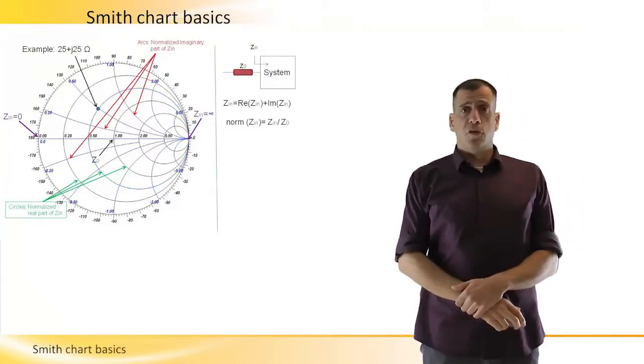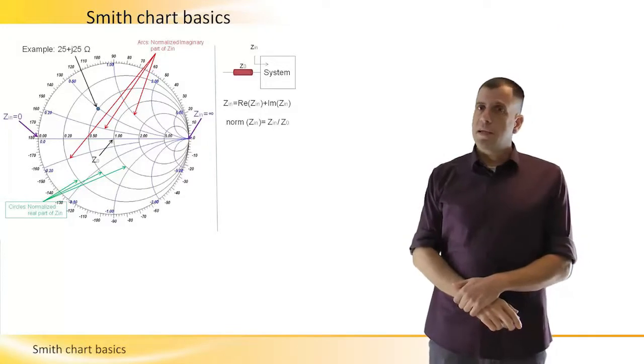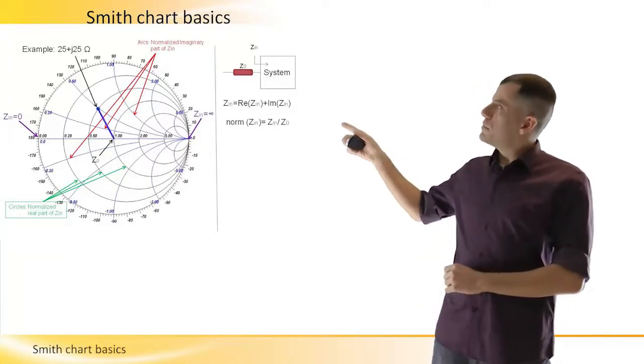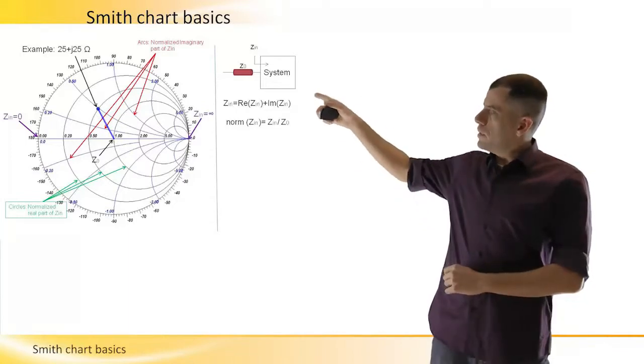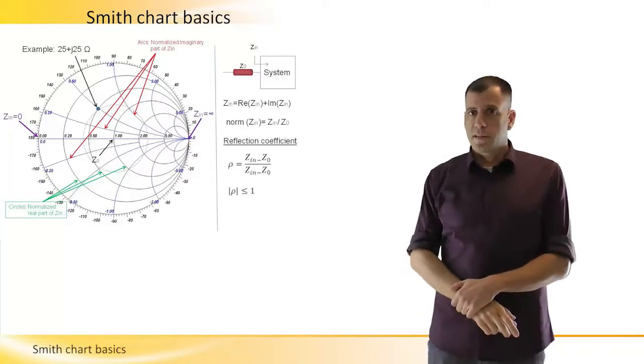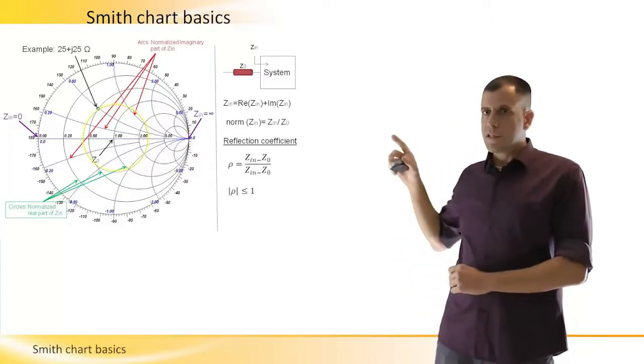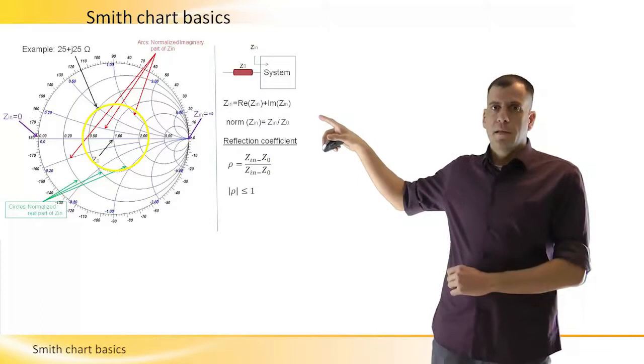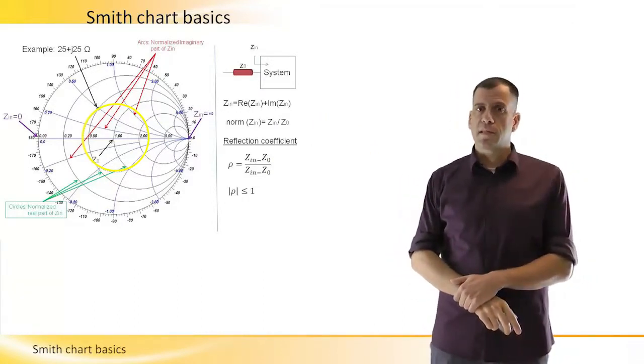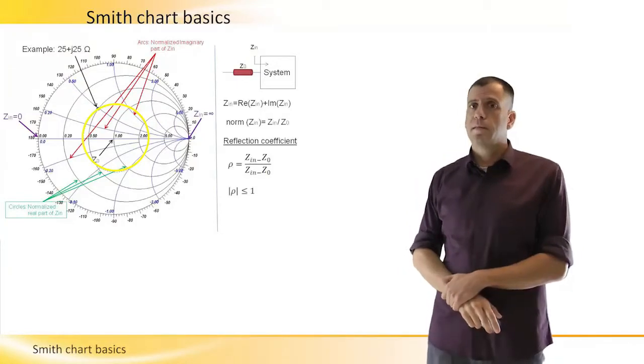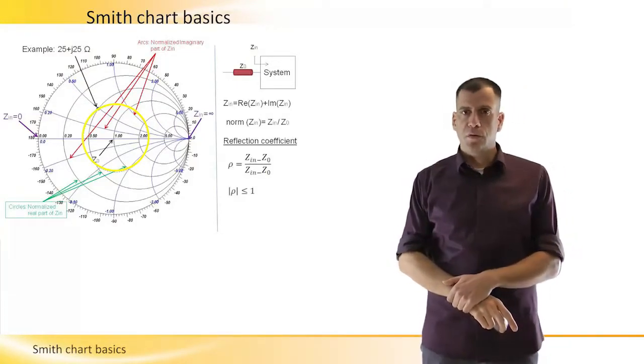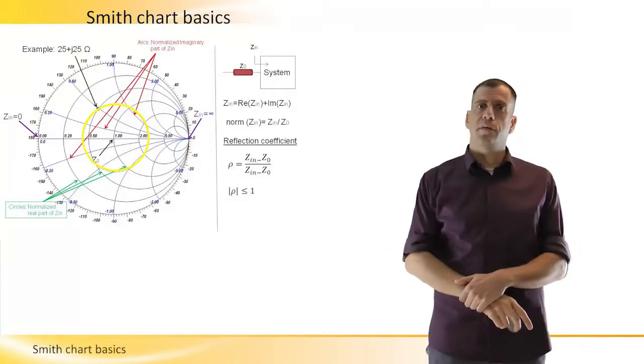The reflection coefficient is the normalized vector that starts from the center of the Smith chart to the point that we have just marked. The radius of the circle whose circumference touches our impedance point and its center is located at the center of the Smith chart is the magnitude of the reflection coefficient, used for instance to calculate the return loss.